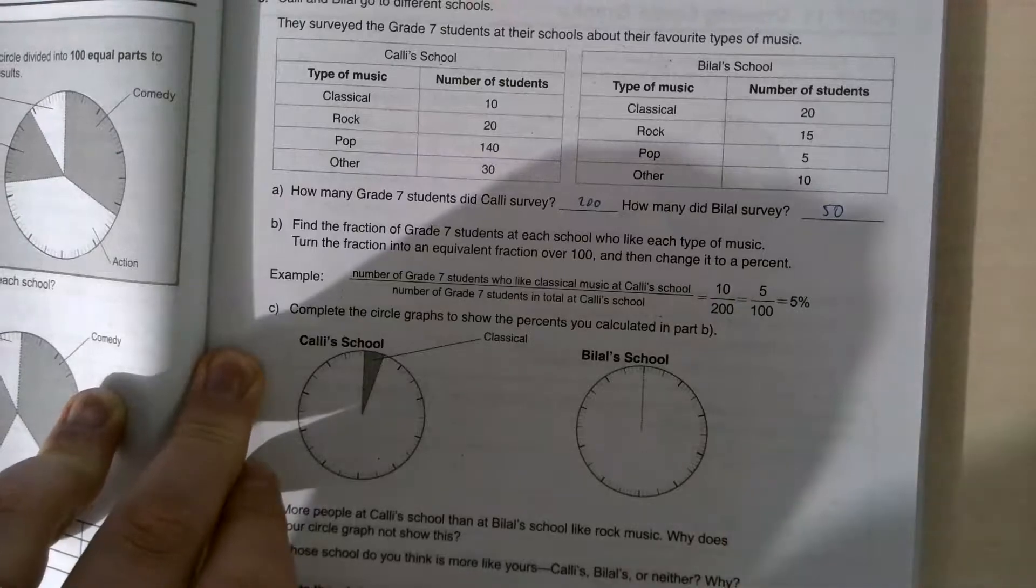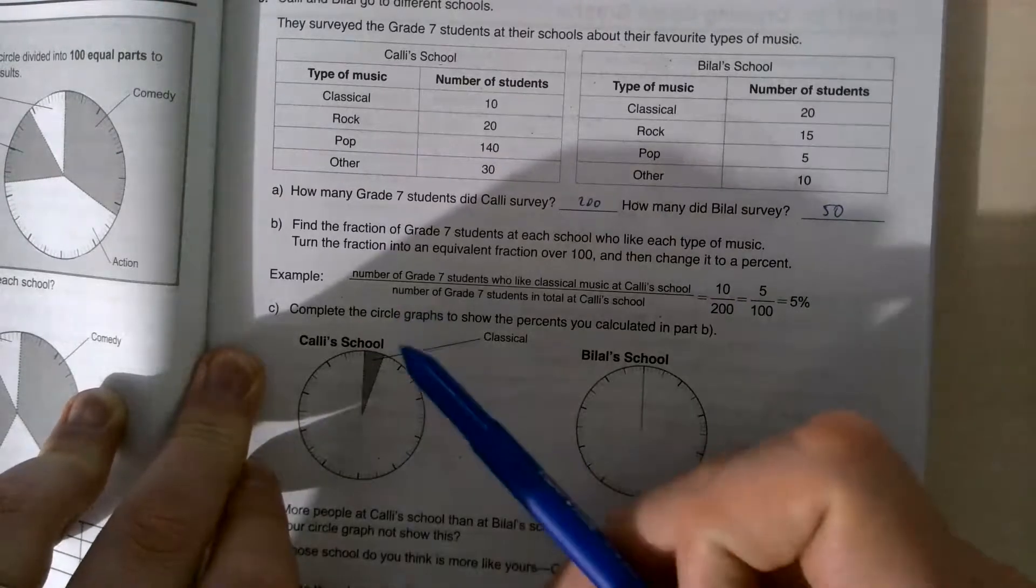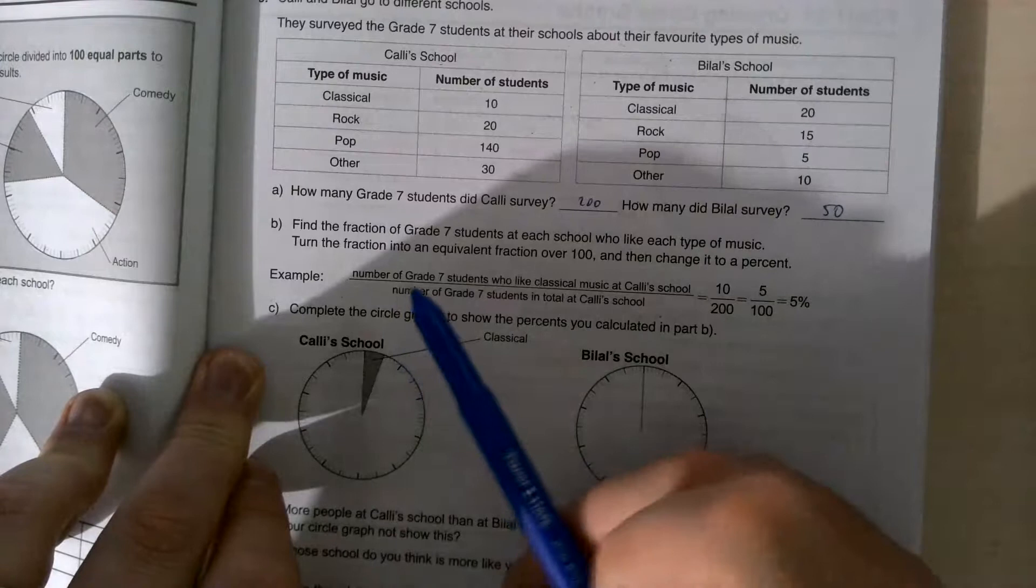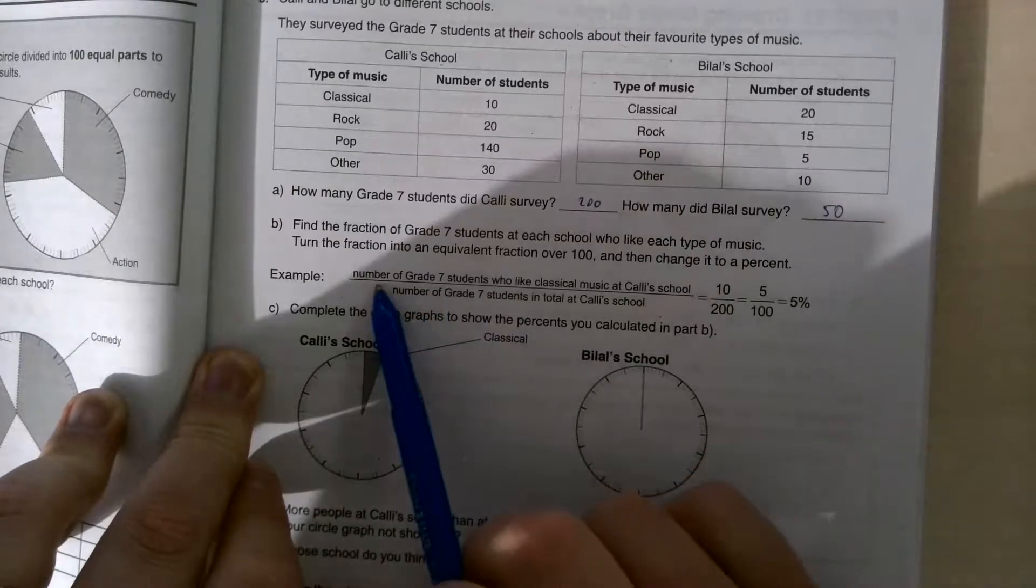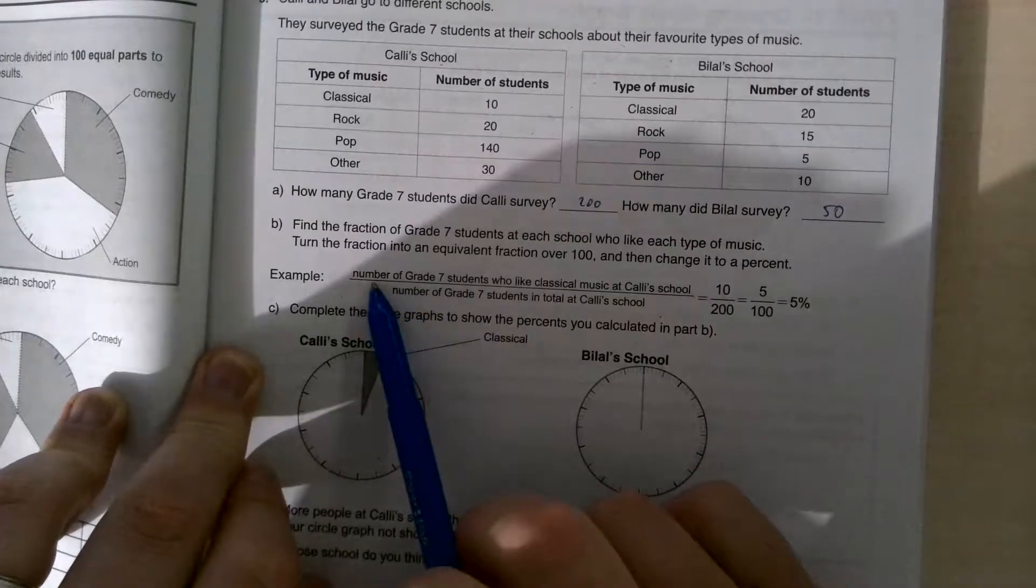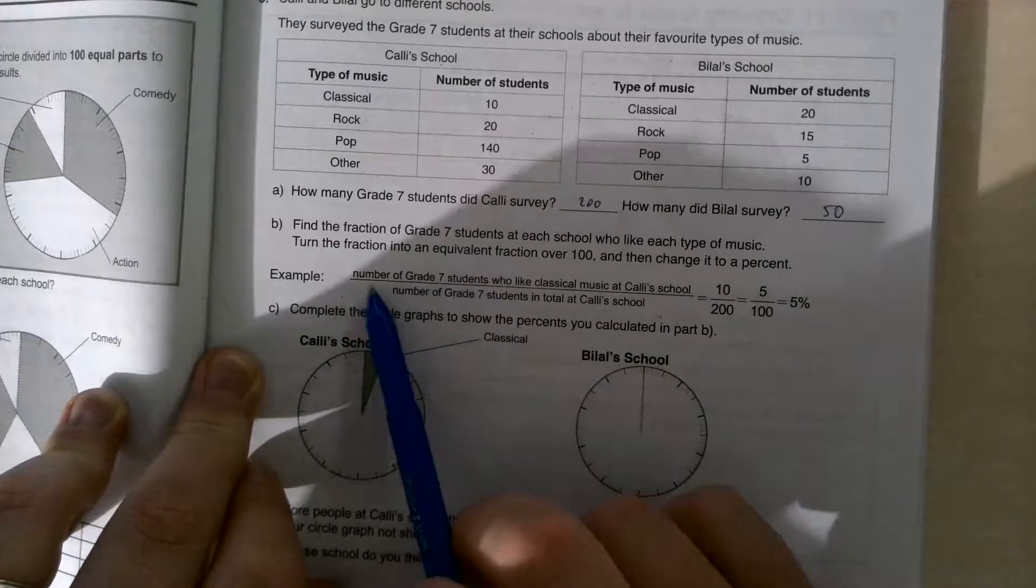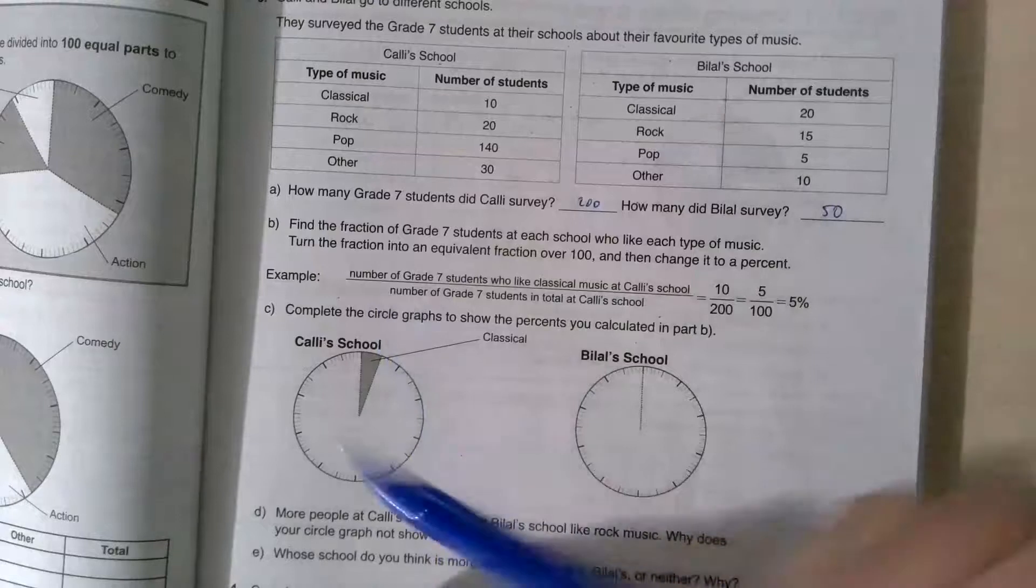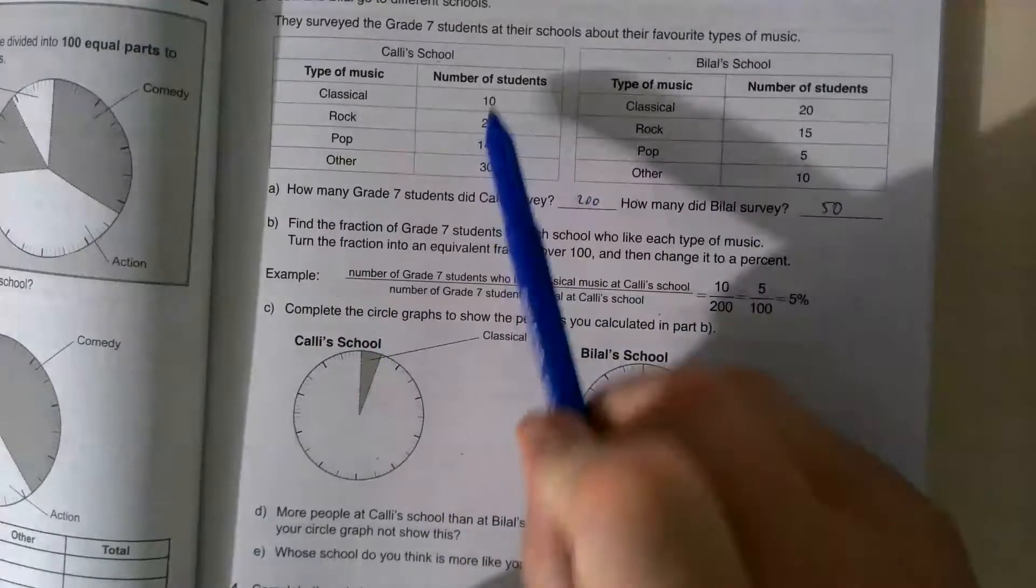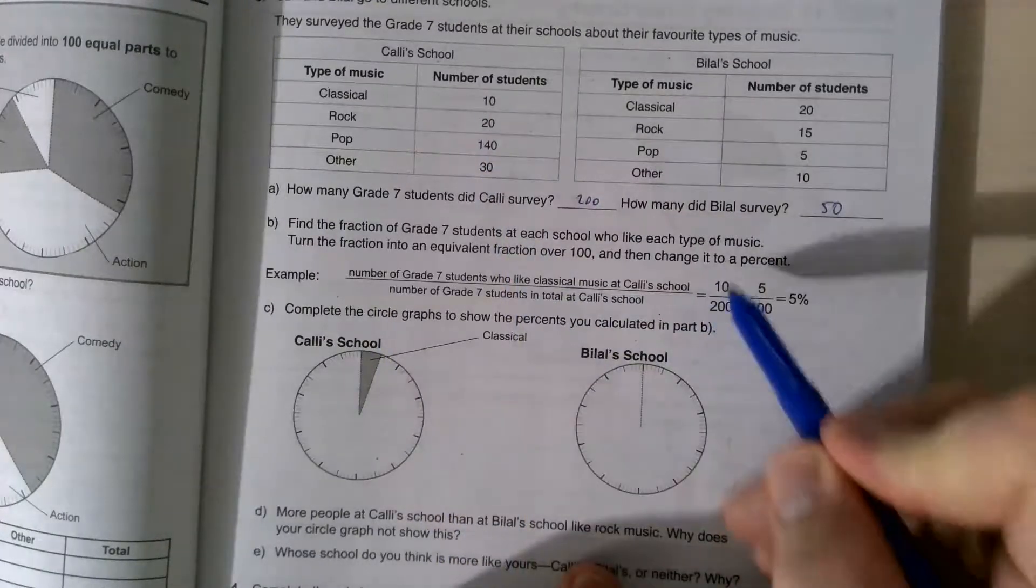There's different types of music here, and what we're going to focus on is classical music. So this is the example. They're asking, we want to find how many grade 7 students like classical music in Cali school as a percentage. So what we're going to do is we're going to find classical school up here, which is 10, or classical music.